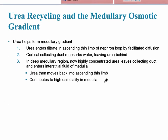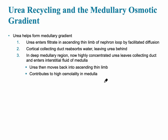The next slide covers urea recycling and the medullary osmotic gradient. Urea recycling occurs by facilitated diffusion — the cortical collecting duct reabsorbs water, leaving urea behind. The urea then moves back into the ascending thin limb, contributing to the high osmolality in the medulla. It is normal for some urea to be in the blood, measured by the BUN (blood urea nitrogen), which indicates how healthy the kidney is.